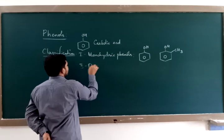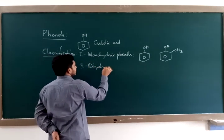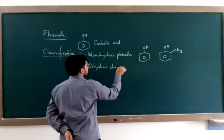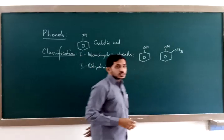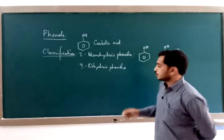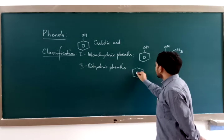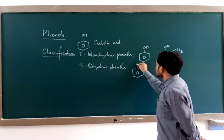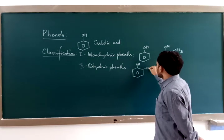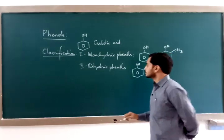The second type is dihydric phenols. Dihydric phenols are those which contain two hydroxyl groups attached to the aromatic system. For example, 1,2-dihydroxybenzene or benzenediols.